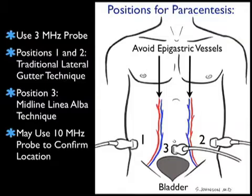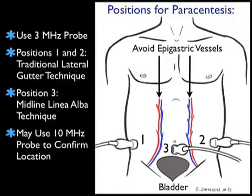This would be above the anterior superior iliac crests, and we can look for fluid within the lateral gutters and plan for a puncture attempt in either of these positions. We can also place the probe in probe position three, the midline linea alba position, below the umbilicus in the relatively avascular midline linea alba.